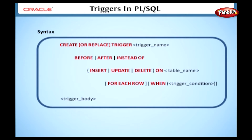INSERT, UPDATE, and DELETE specify the triggering event to be performed, and we can specify all three triggering events in a single trigger. The FOR EACH ROW option specifies that the trigger is at row level; if you don't specify this option, the trigger will be at a statement level. For a row level trigger, the trigger restriction can be specified in the WHEN clause — the trigger condition is an SQL condition that must be satisfied for Oracle to fire the trigger. The trigger body is a PL/SQL block in which you specify the trigger actions.